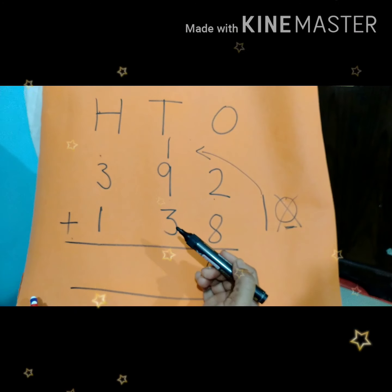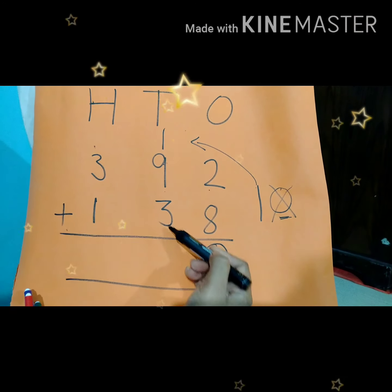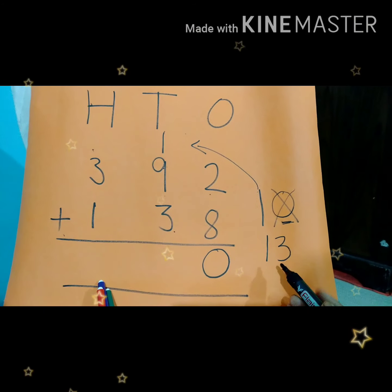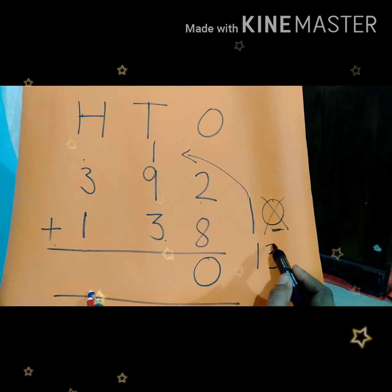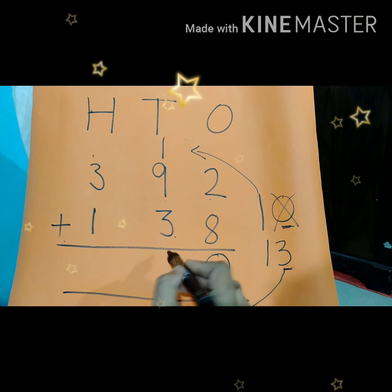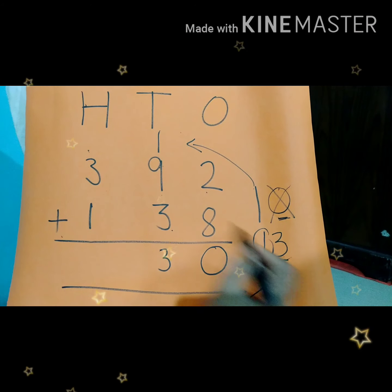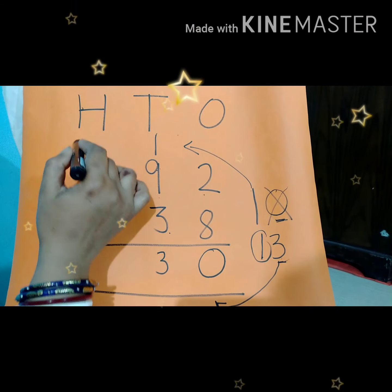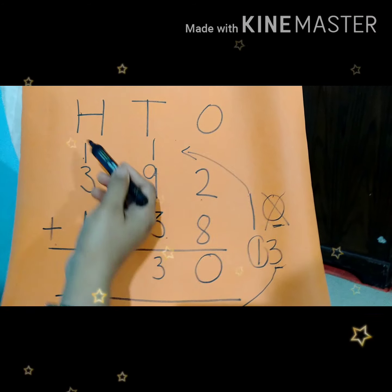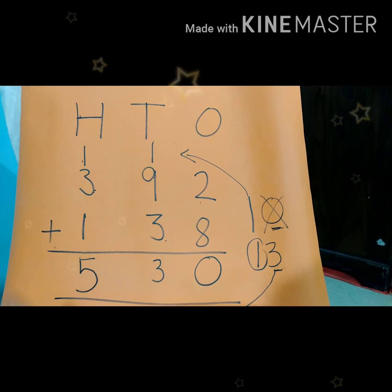Now we will add the numbers which are in 10's place. 9 plus 1 is how much? Yes, 10. 10 plus 3 — we have a 2-digit number that is 13. So we will see what number is in 1's place — we have 3 in 1's place. So this 3 will go below. And this 1 will go as a carry to the next number which is in 100's place. So we can write this 1 here. Now 1 plus 3 is 4, and 4 plus 1 is 5. So we can write 5 here.